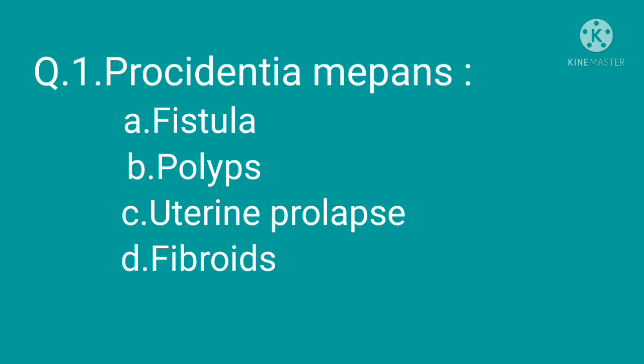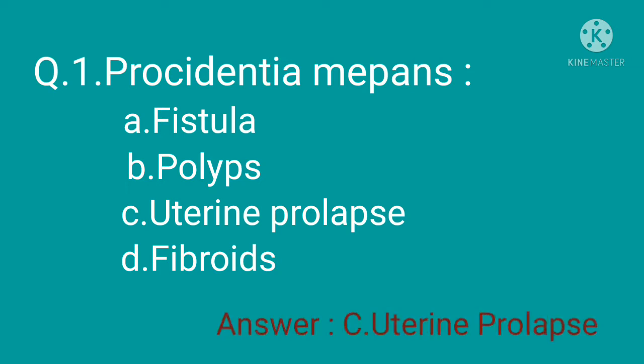Question 1: Procedentia means — option A: fistula, option B: polyps, option C: uterine prolapse, option D: fibroids. The correct option is option C, uterine prolapse.